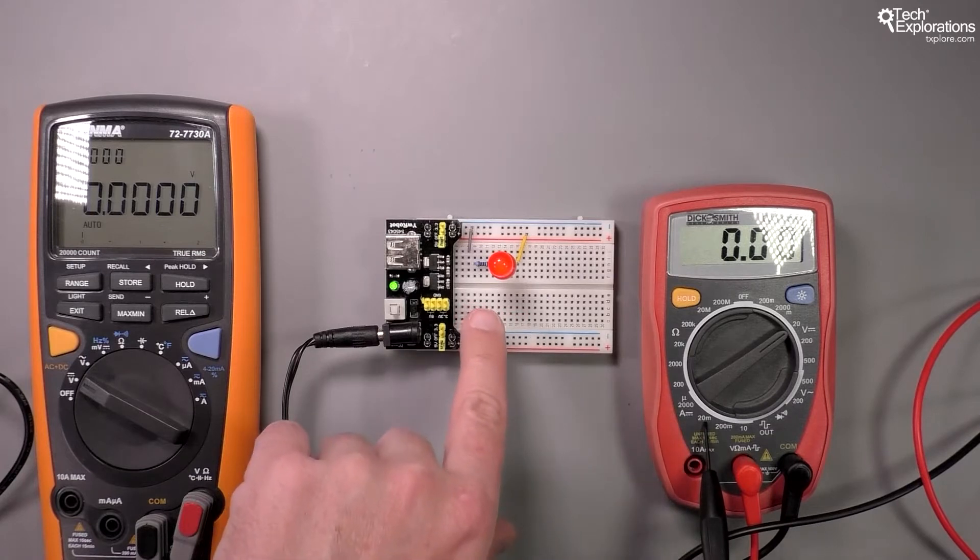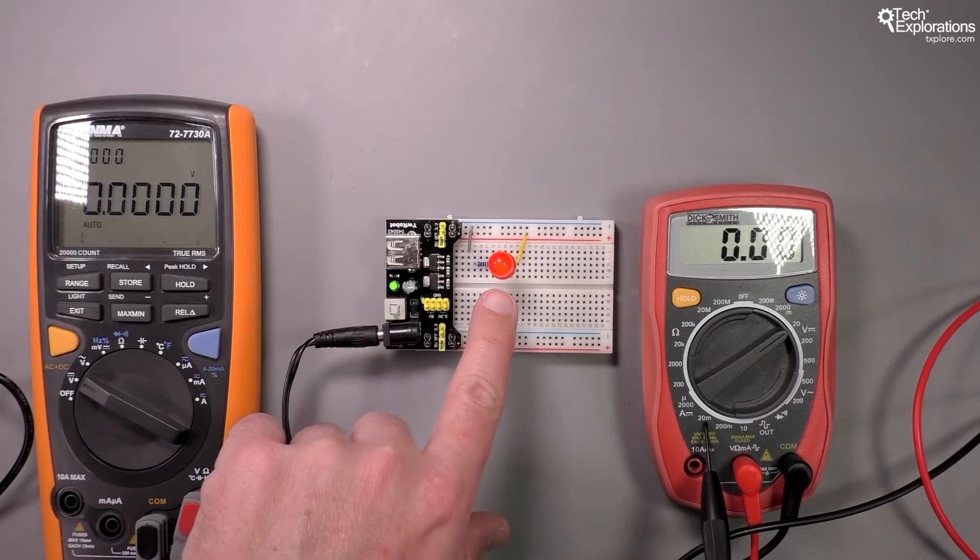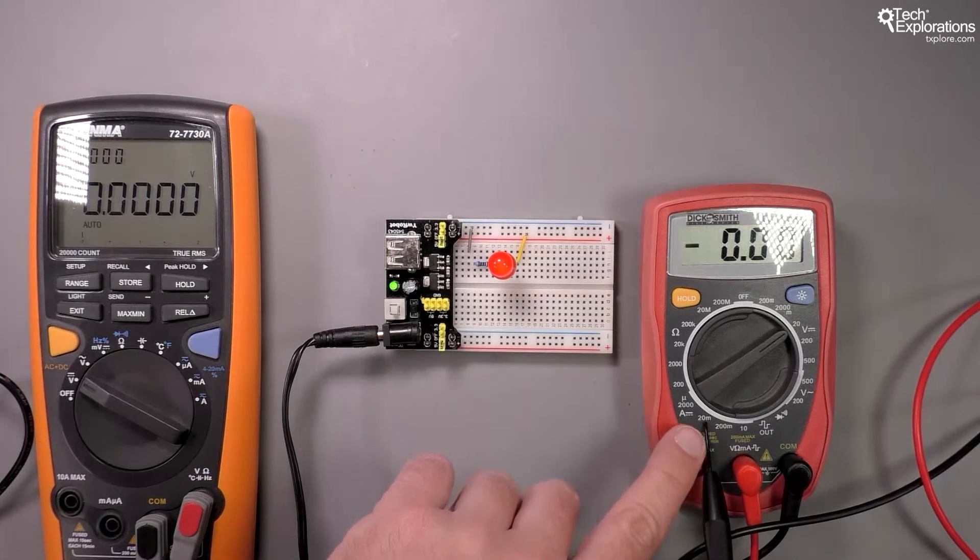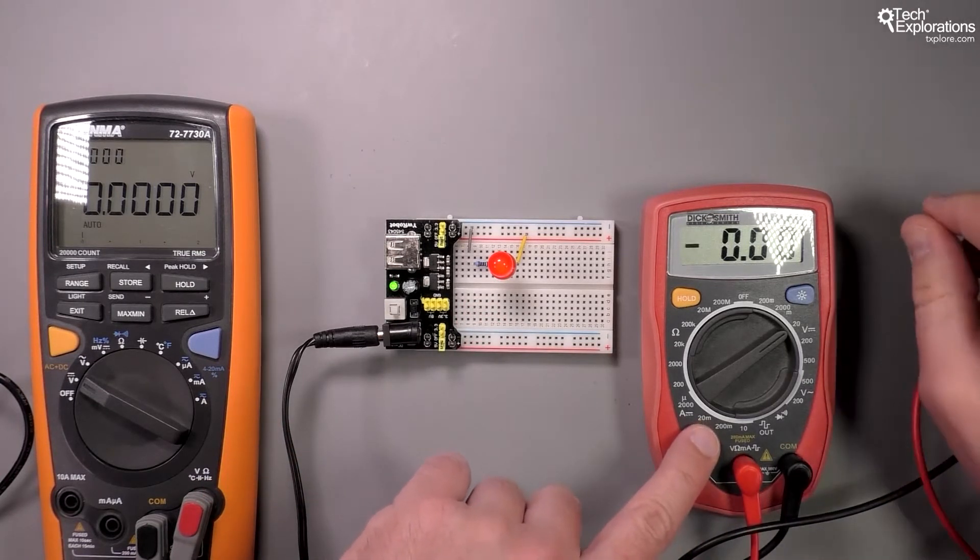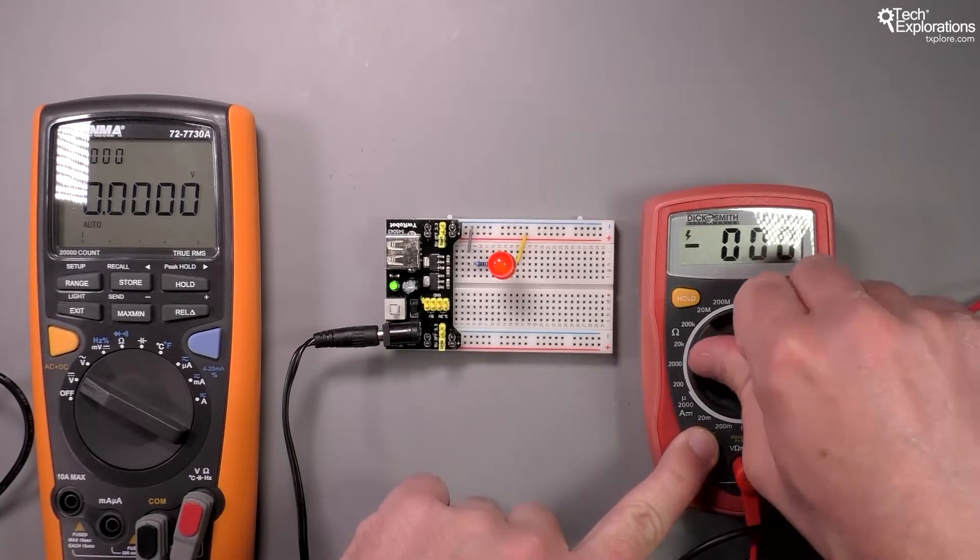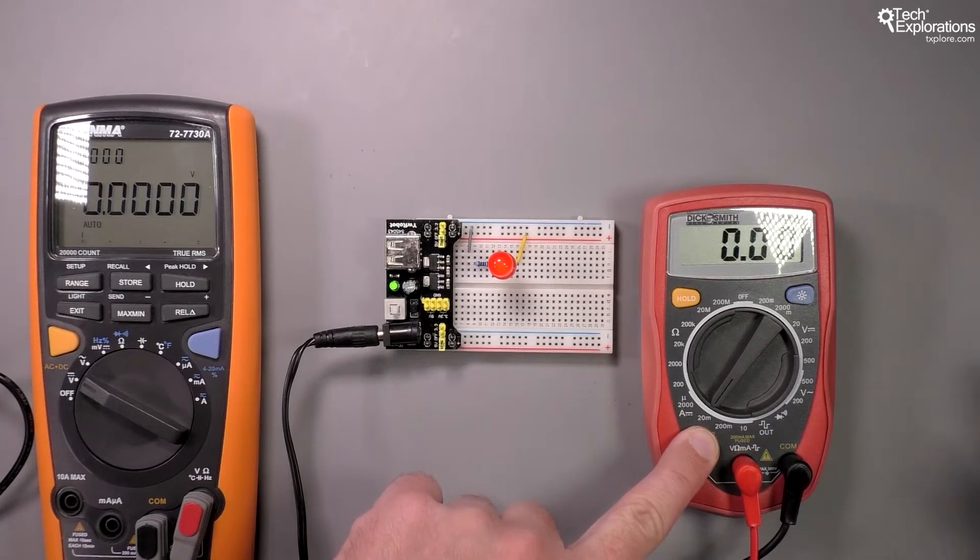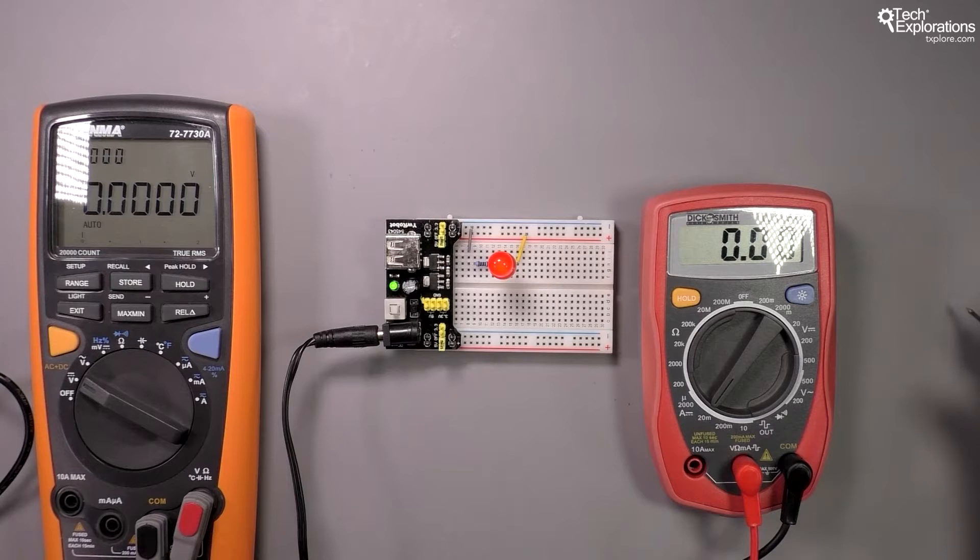I could make a better guess by calculating the current flowing through the LED using Ohm's law, but I'm not going to bother with that for now. I just want to start with a guess of 20 milliamps and see if my ammeter will be able to measure this current.